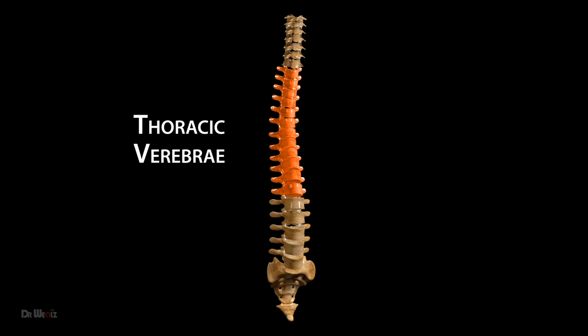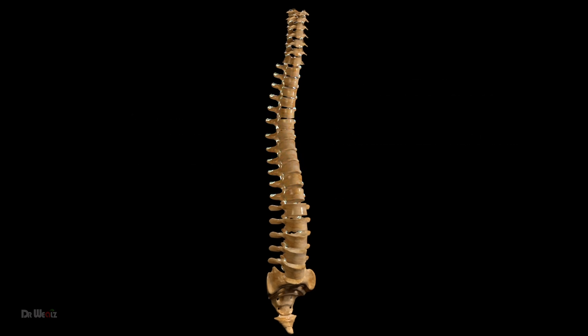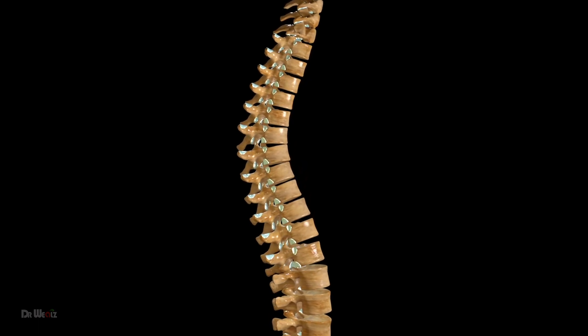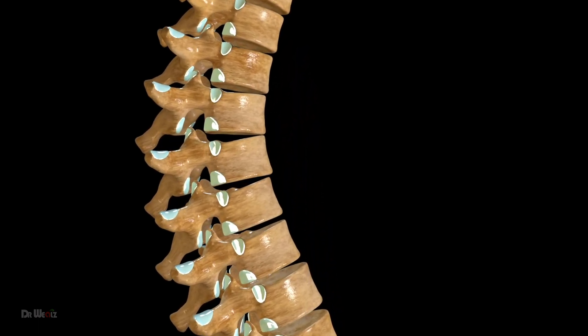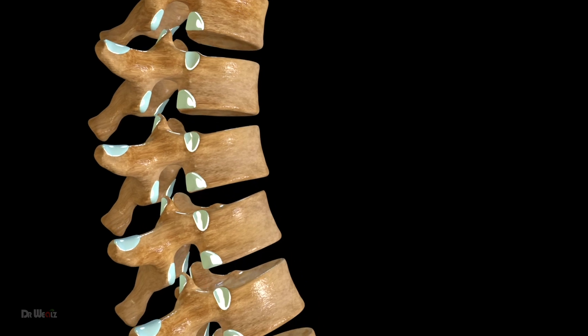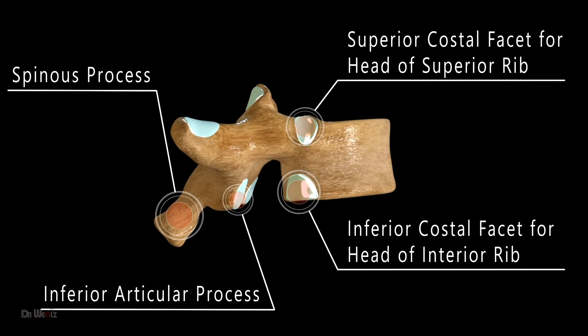The thoracic vertebrae are the 12 vertebrae in the middle section of the vertebral column and play a vital role in supporting the ribcage, protecting the spinal cord, and allowing for flexibility and movement of the trunk. Each thoracic vertebra has a number of distinct features that contribute to its function. The spinous process, located at the back of each thoracic vertebra, protrudes posteriorly and provides attachment points for muscles and ligaments.